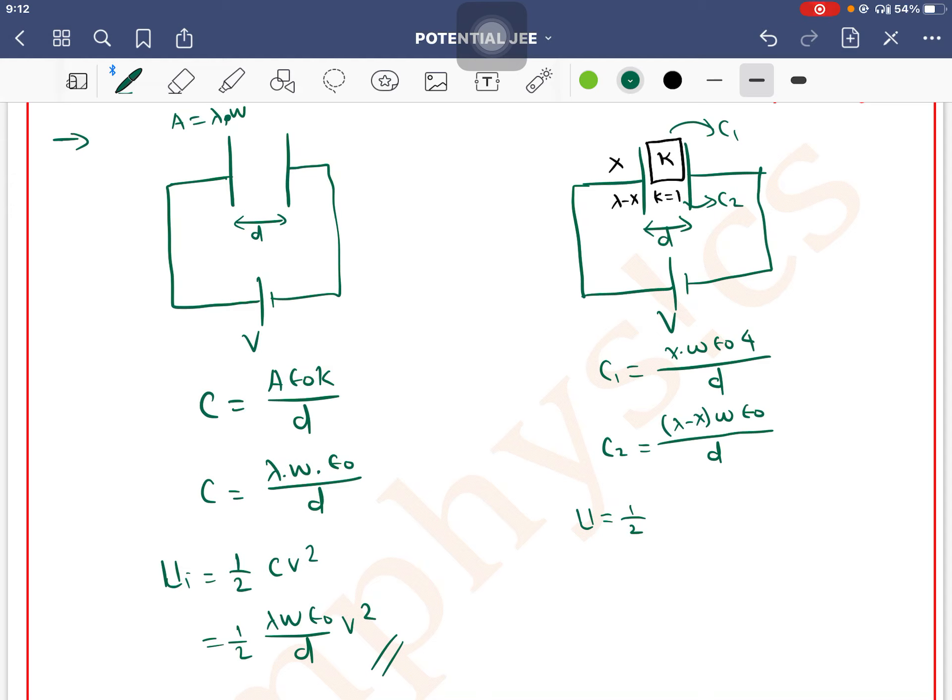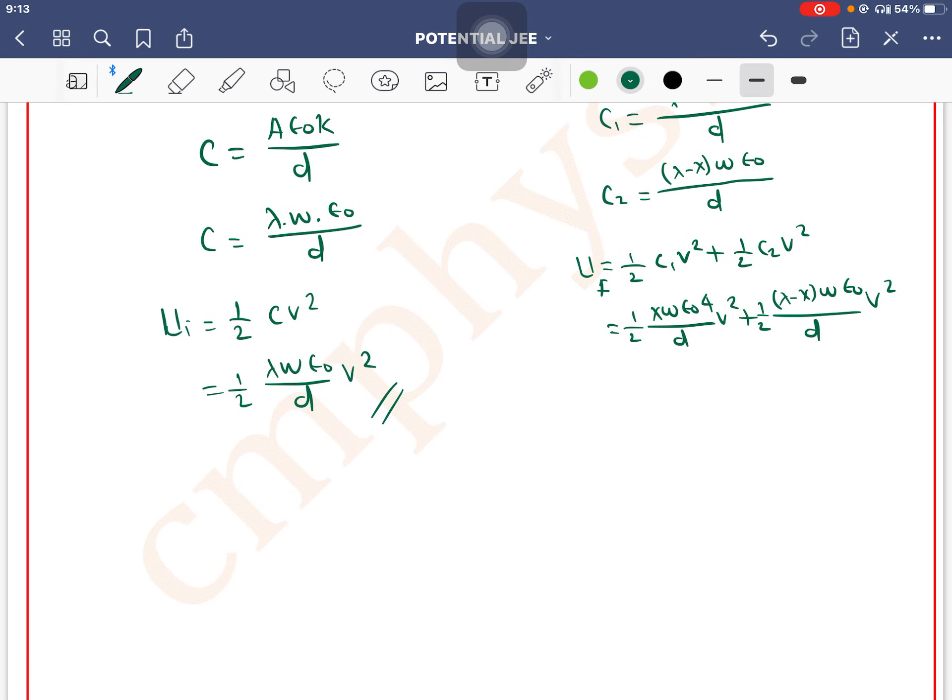Now the energy equals half C1 V squared plus half C2 V squared. This becomes half times x W epsilon naught 4 by D times V squared plus half times lambda minus x W epsilon naught by D times V squared. This is the final energy, which equals two times the initial energy.